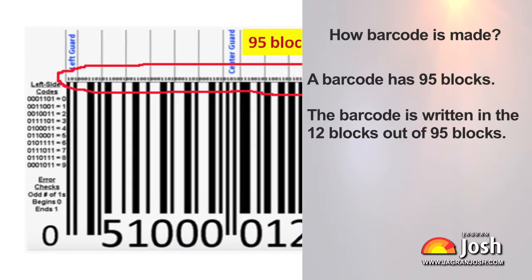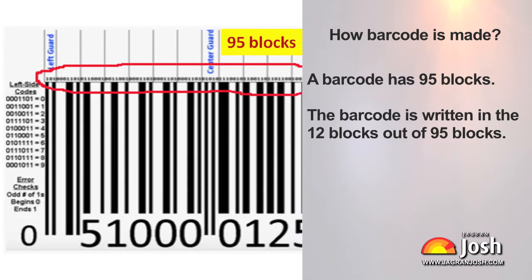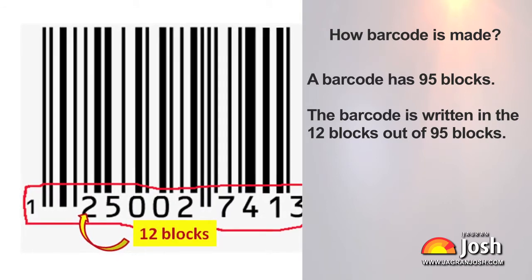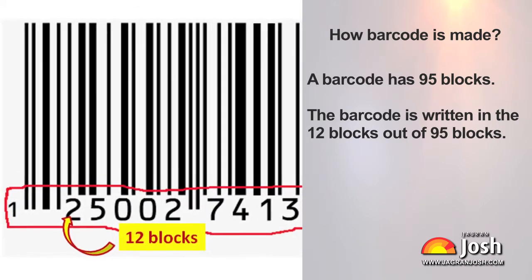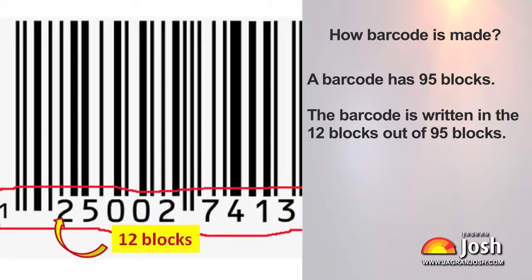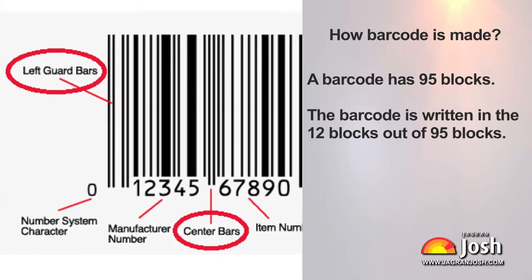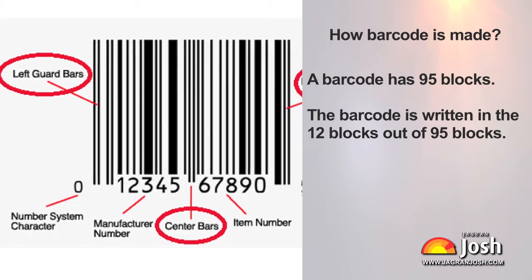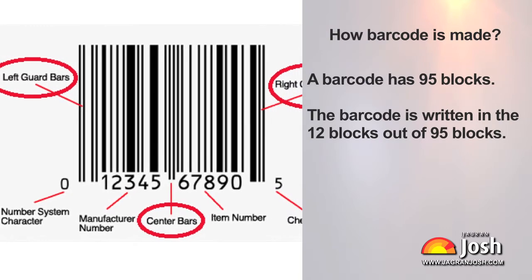How is a barcode made? A barcode has 95 blocks. The barcode data is written in 12 blocks out of these 95 blocks. Out of the 95 blocks, three blocks are named as the left guard, centre guard, and right guard.